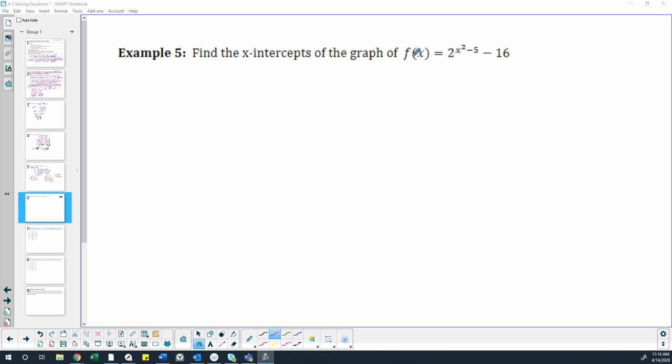So if we have this function f(x) or y equals 2 to the x squared minus 5 and then minus 16, that means we want to know when the value of this is zero. We're going to take our equation and set it equal to zero.